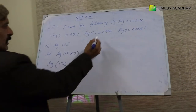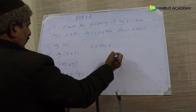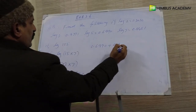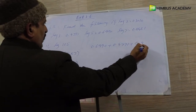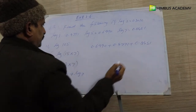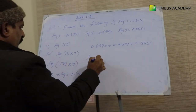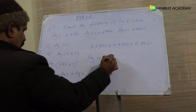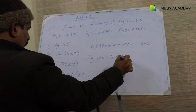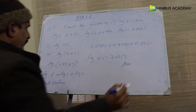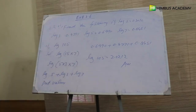Log 5 کی جگہ 0.6990، log 3 کی جگہ 0.4771، اور log 7 کی جگہ 0.8451۔ ان سب کو plus کرنے پر log of 105 is equal to 2.0210. یہ ہمارا answer ہے — question 2 کا first part۔